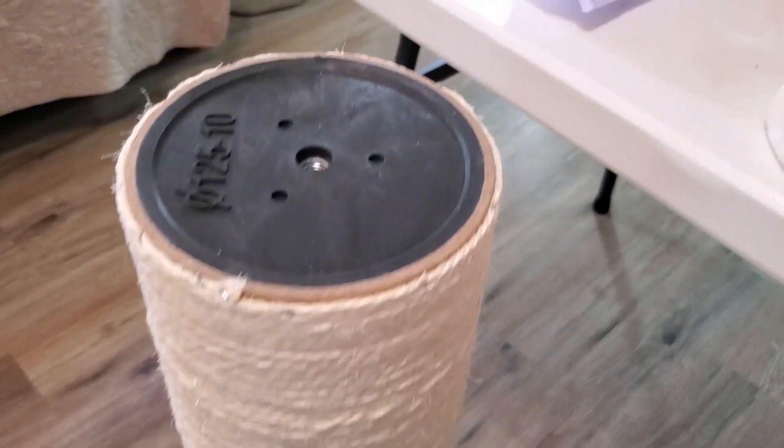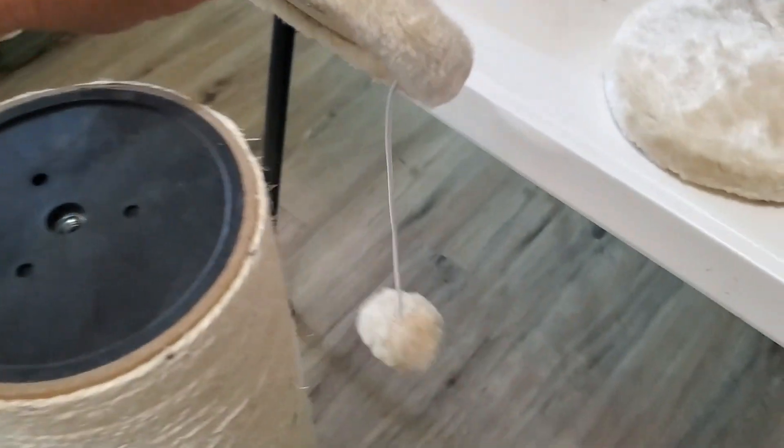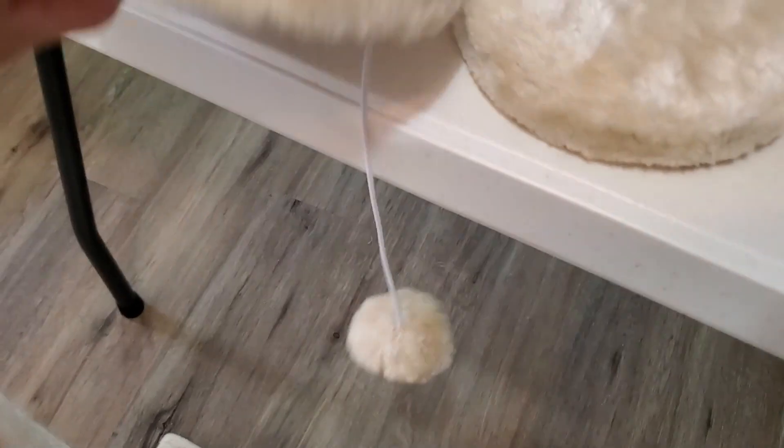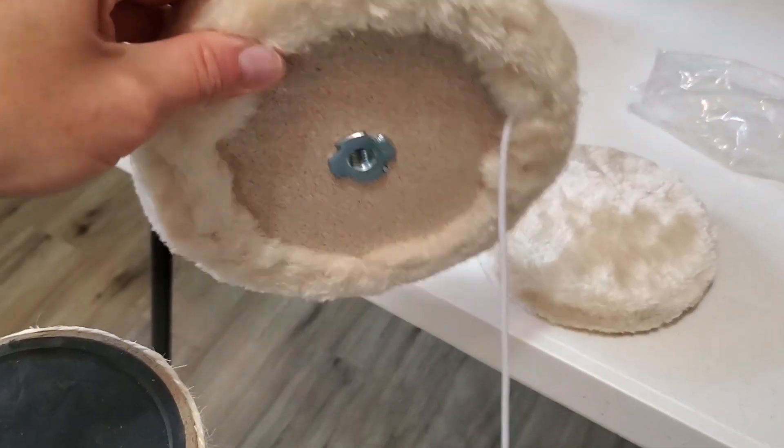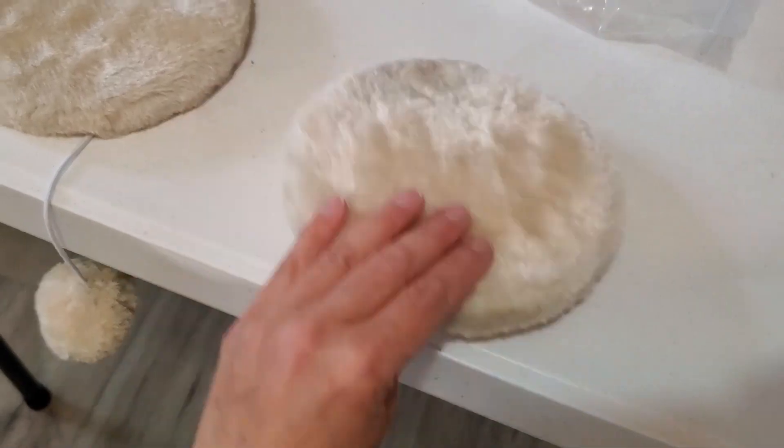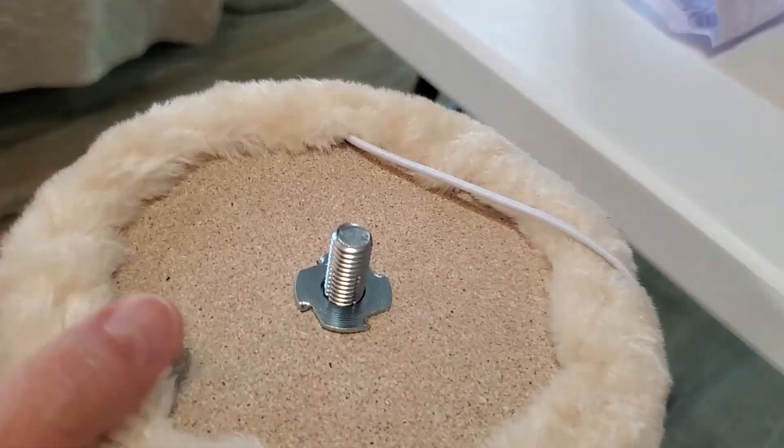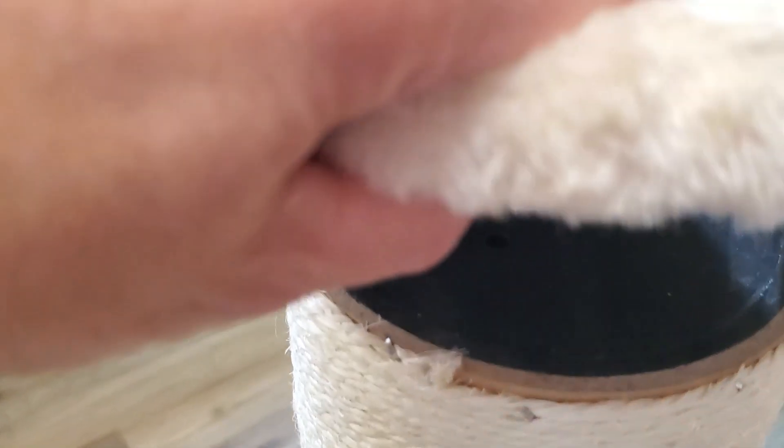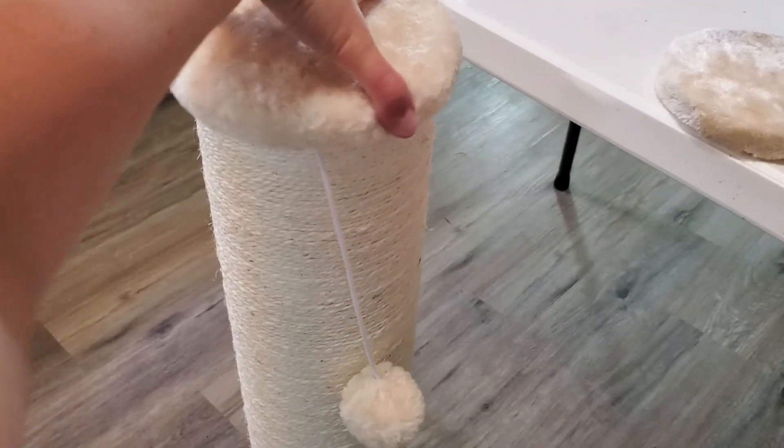Now for the top, they provide two different kinds of tops. You can have one with this little toy or one without. I think my cats would like the one with the toy. So that's the one I'm gonna put in at the top right here.